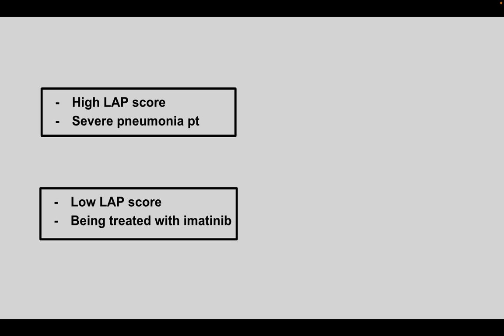Next, you have a patient that has a high LAP score and severe pneumonia. This is called a leukemoid reaction. Next, you have a patient with a low LAP score who is being treated with imatinib. This is CML.